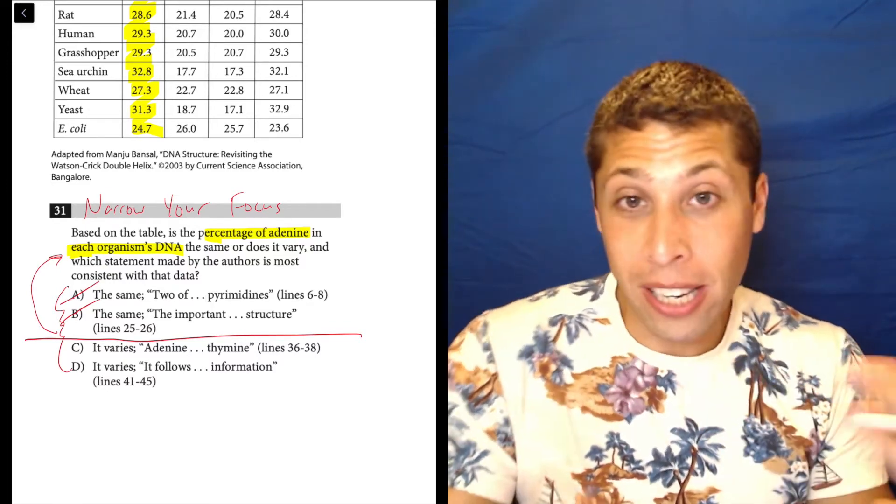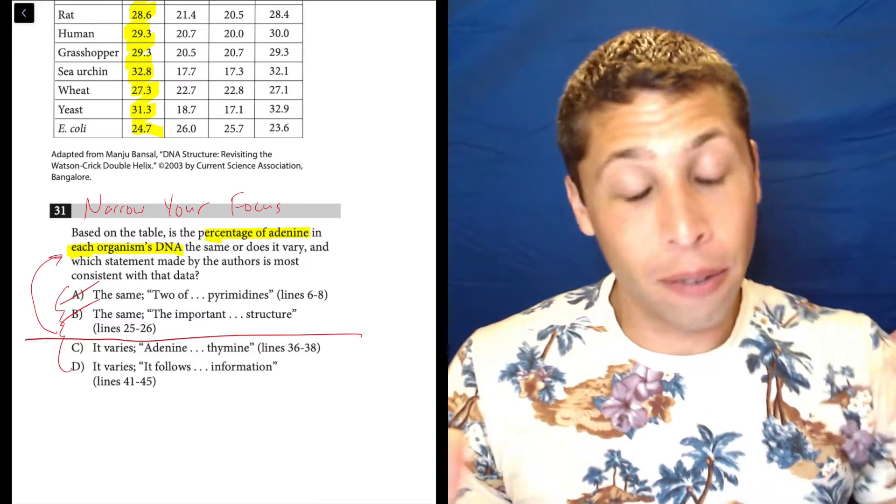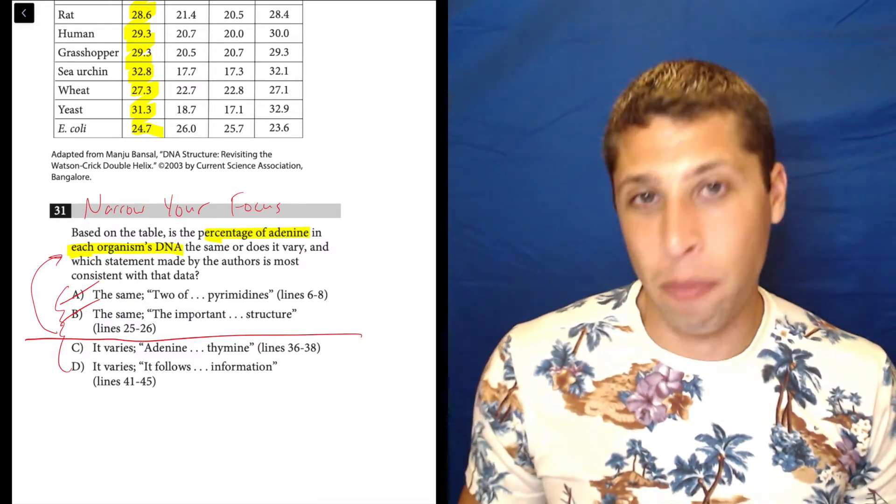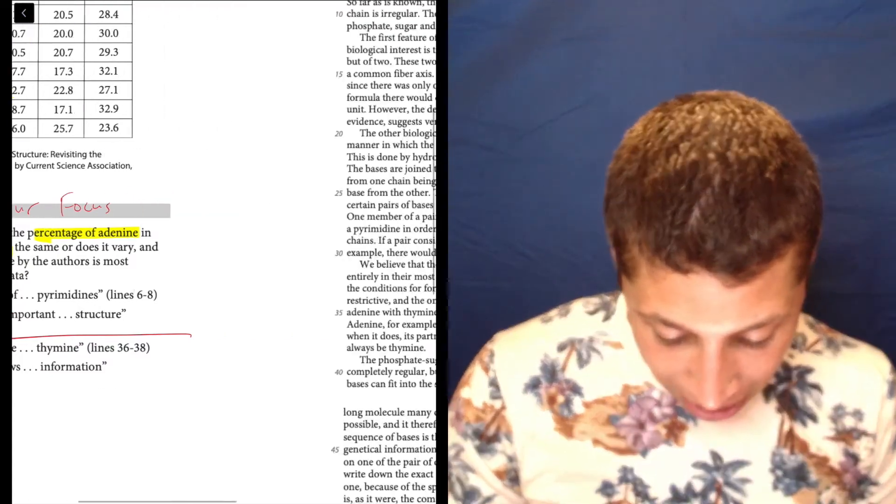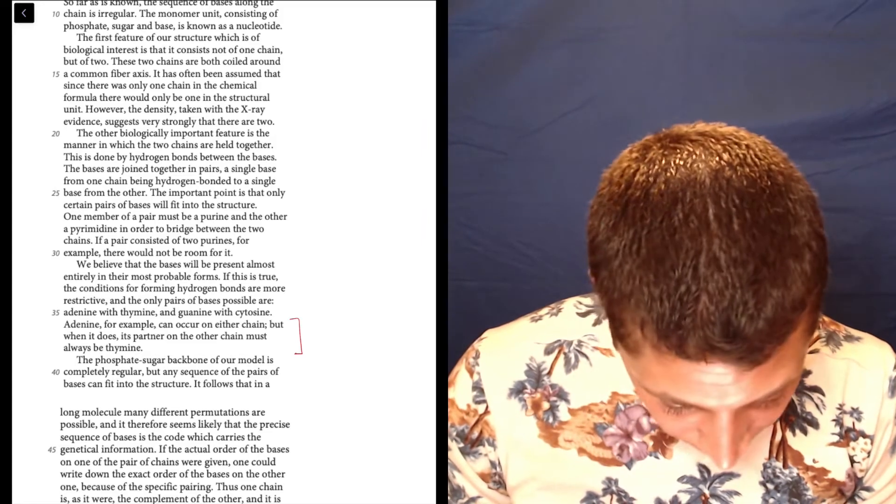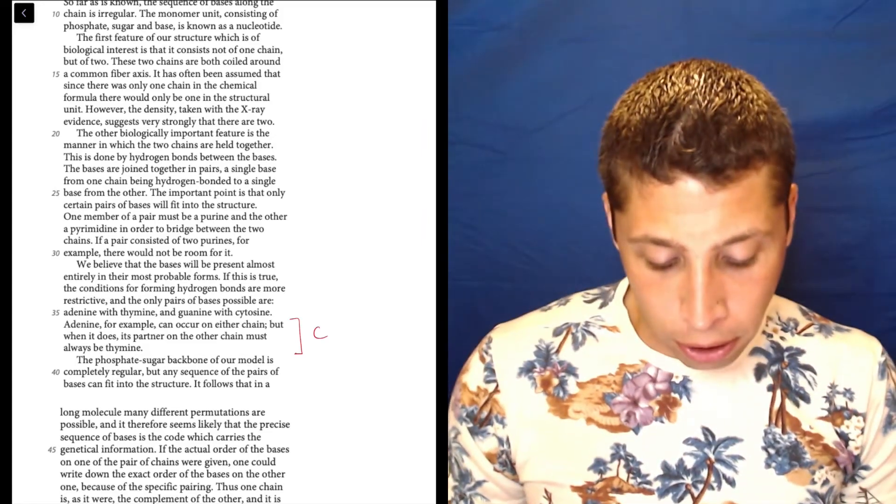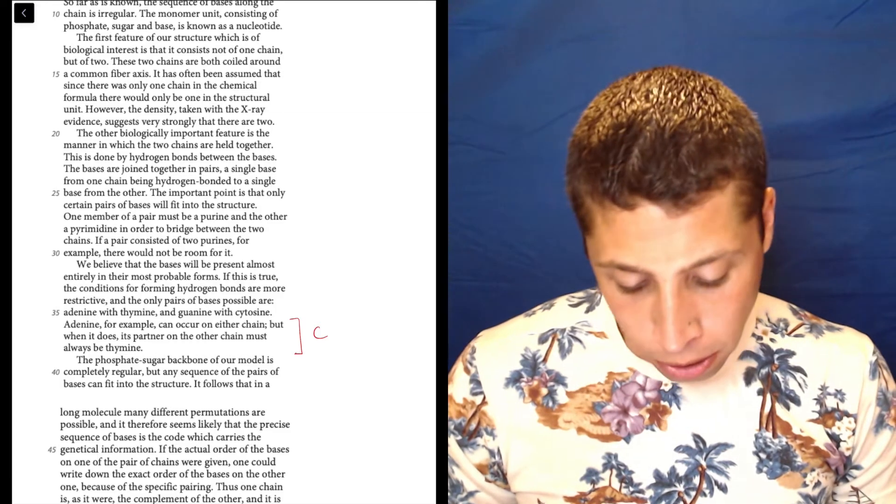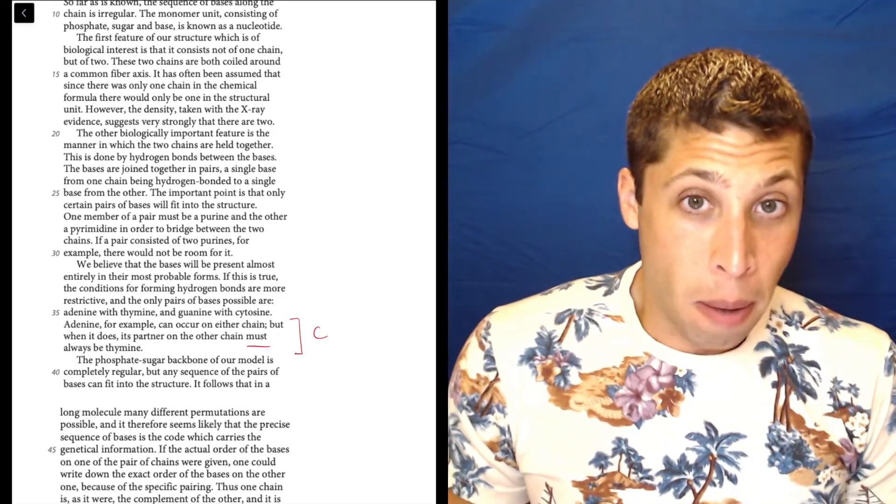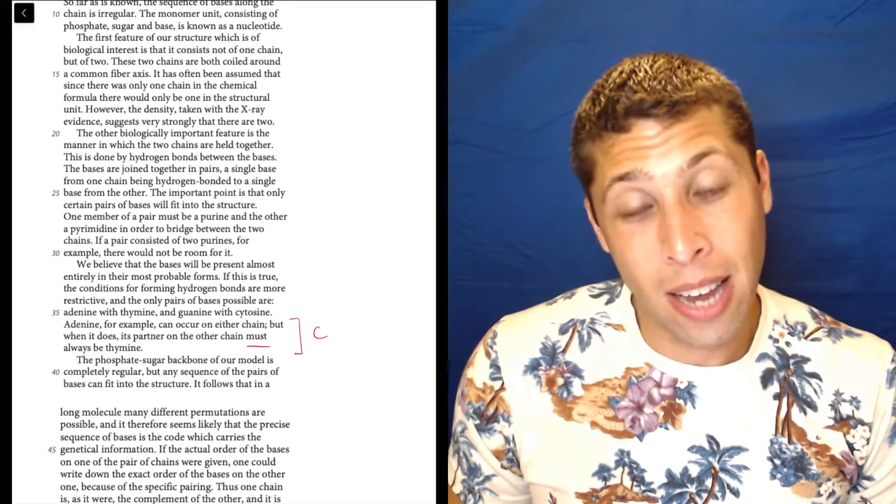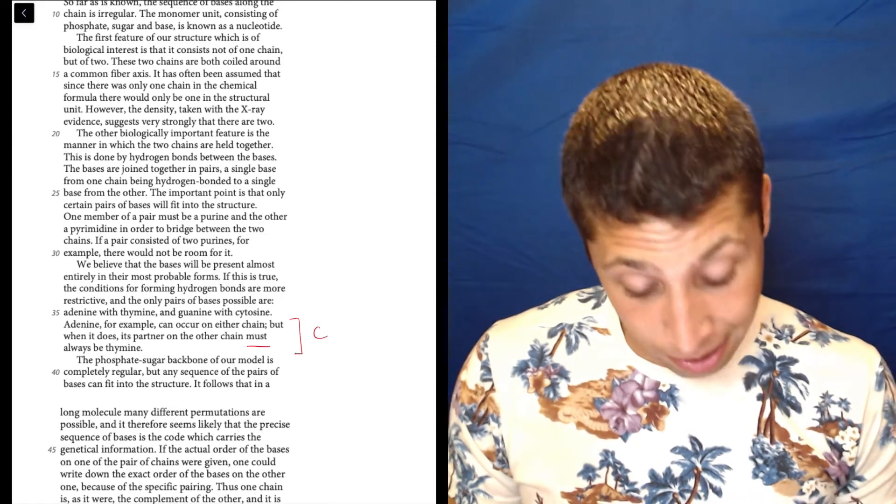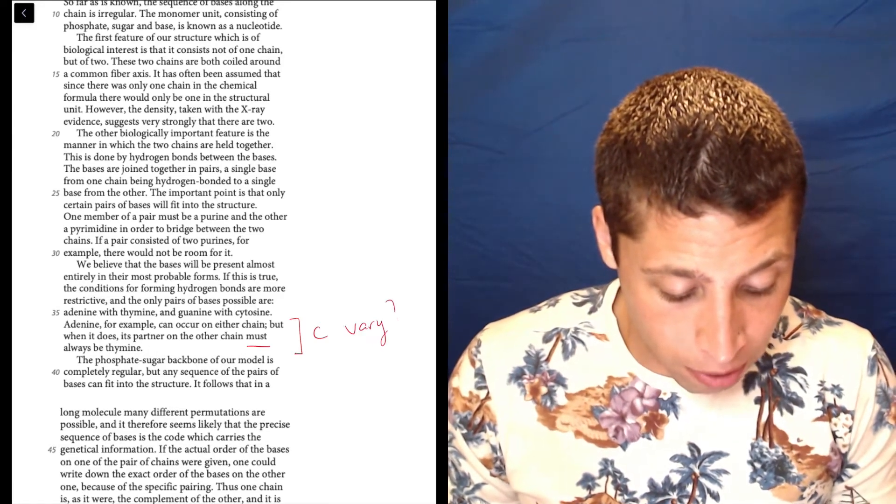So that's good now because we need to support that with the passage. So we have to read less of the passage because we know that A and B don't even matter. So let's look at these lines. 36 to 38. 36 to 38 is here. So that's choice C. Adenine, for example, can occur on either chain. But when it does, its partner on the other chain must always be thymine. Well, I'm looking for something that talks about variation. The word must sounds like things don't vary. So I don't really understand what I read, but it doesn't seem to say anything about anything varying.